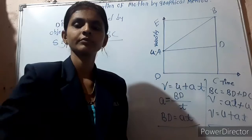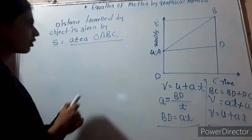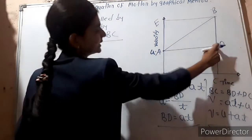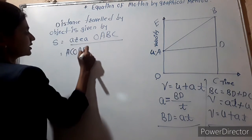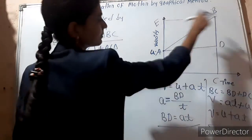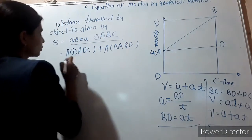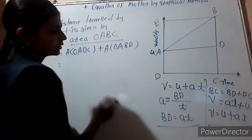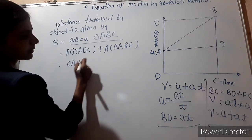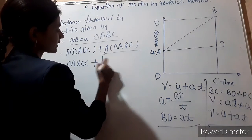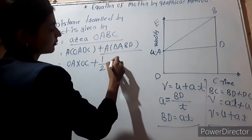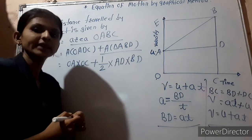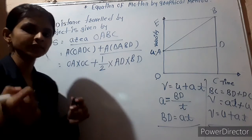The area of the trapezium is the sum of the rectangle and the triangle. The rectangle is oadc and the triangle is abd. We know that the area of a rectangle is length multiplied by width. So oa multiplied by oc, plus the area of triangle which is half base times height — half of bd times ad. Now it is time to replace all the values.